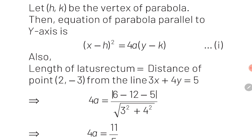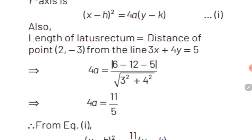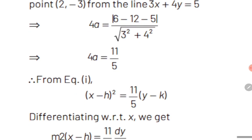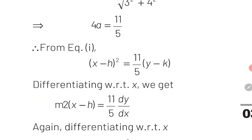The length of latus rectum 4a equals |6 - 12 - 5| / √(9 + 16) = 11/5. Therefore the equation of parabolas becomes (x - h)² = (11/5)(y - k). We take the derivative twice because there are 2 unknown constants h and k. Taking the first derivative: 2(x - h) = (11/5)·(dy/dx). Taking the second derivative to eliminate h: 2 = (11/5)·(d²y/dx²).